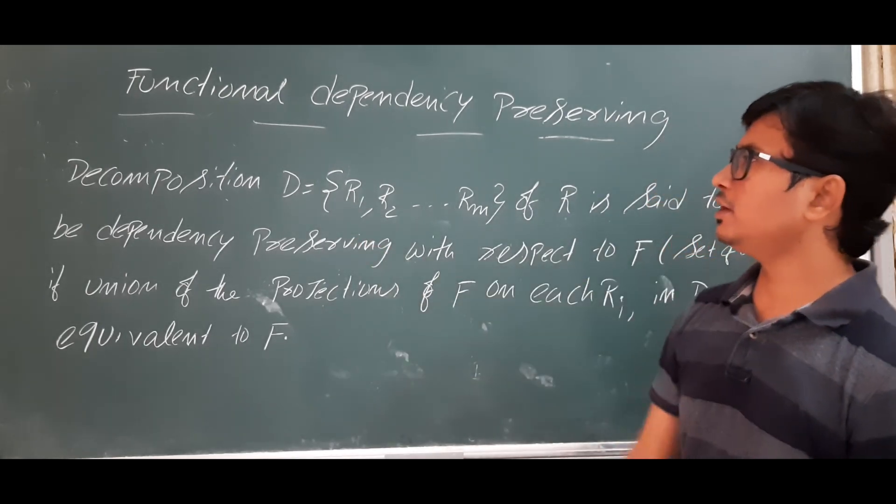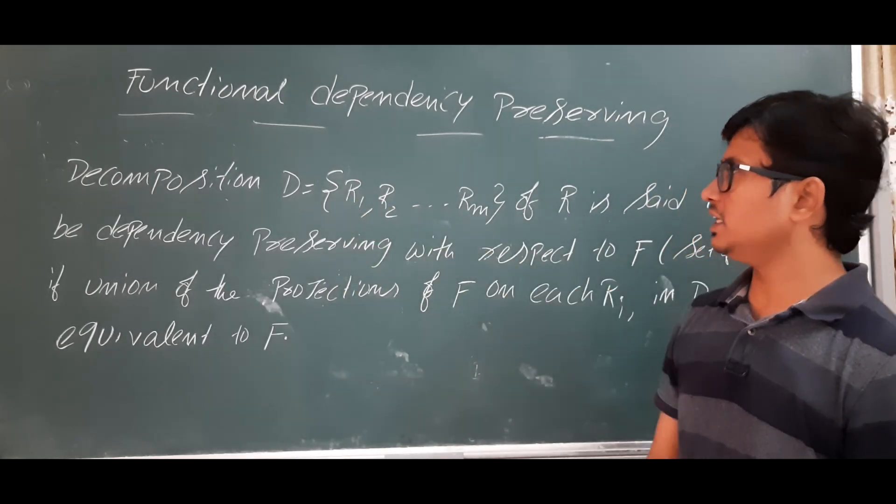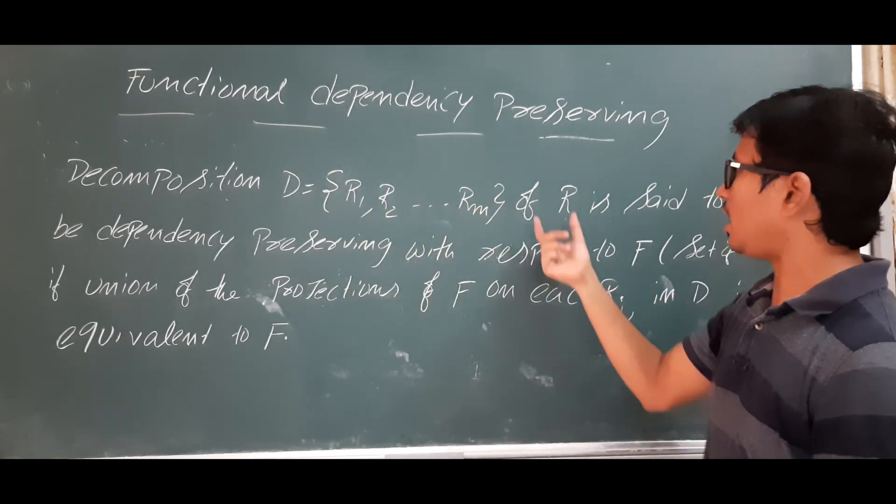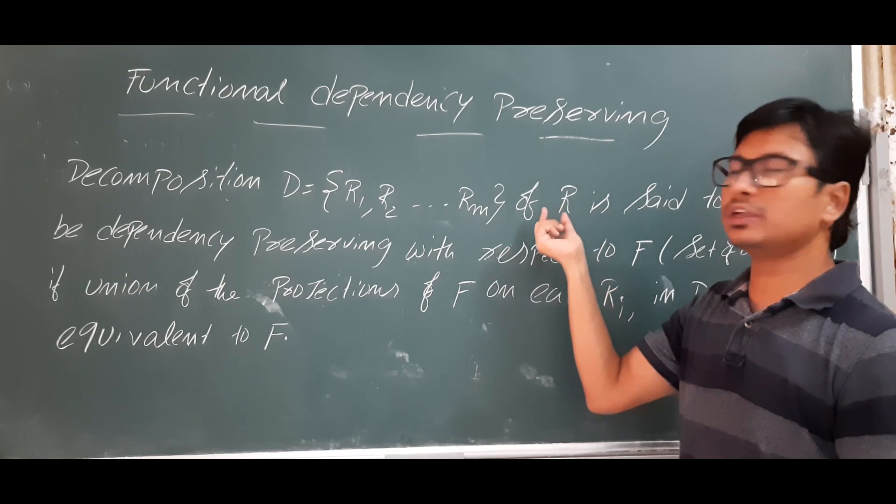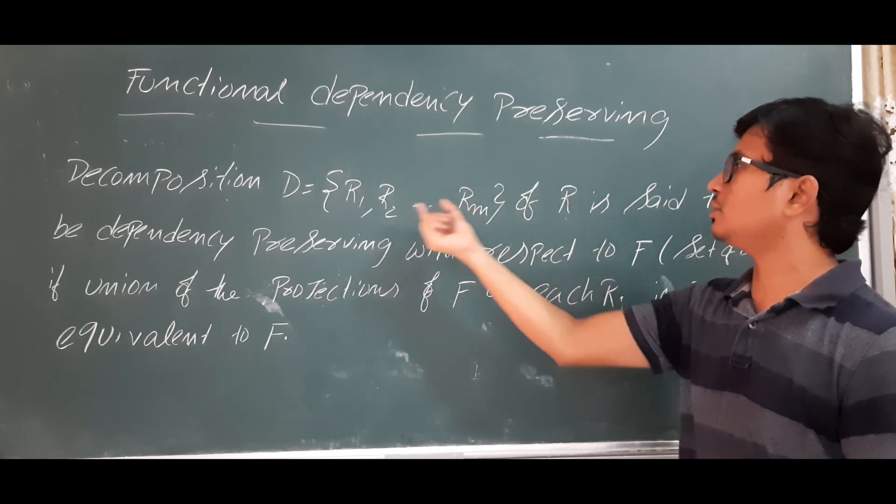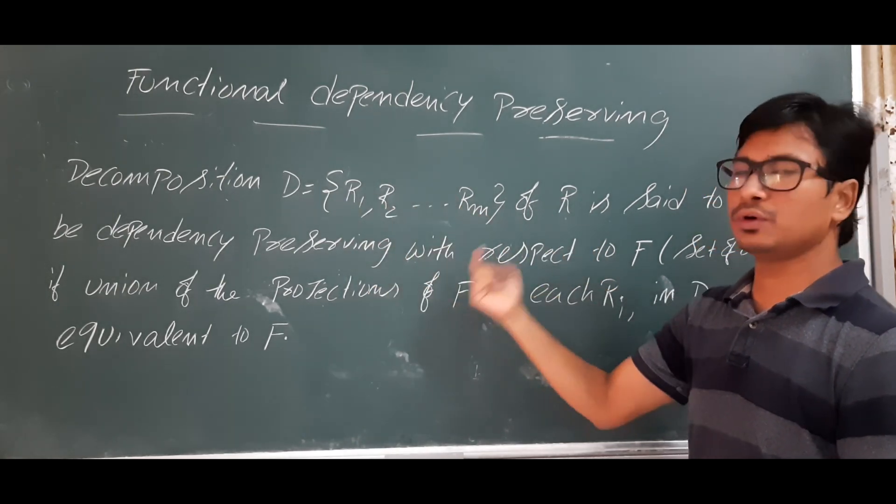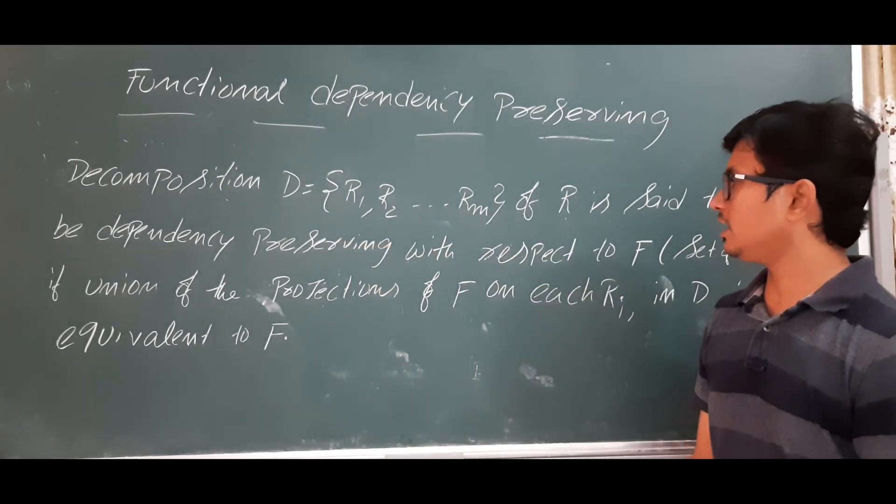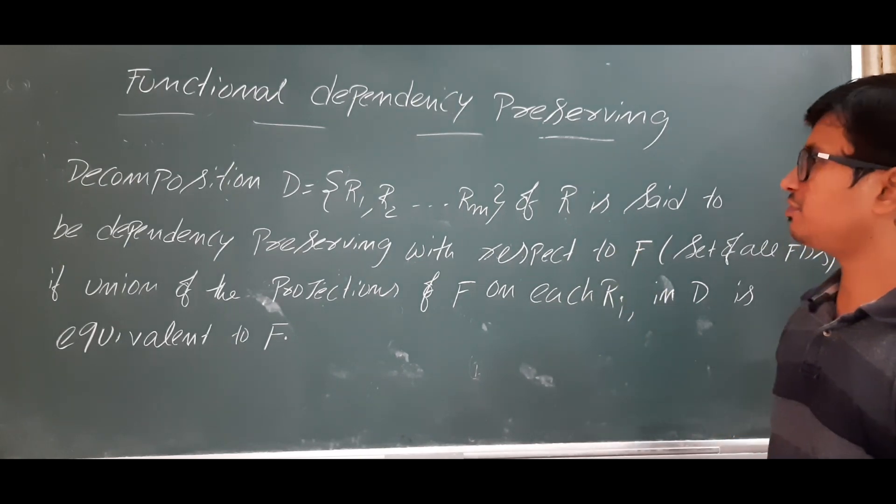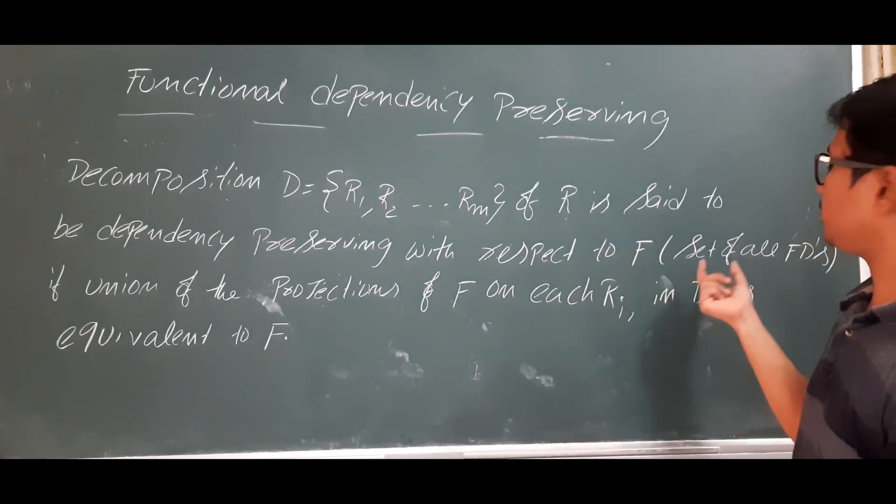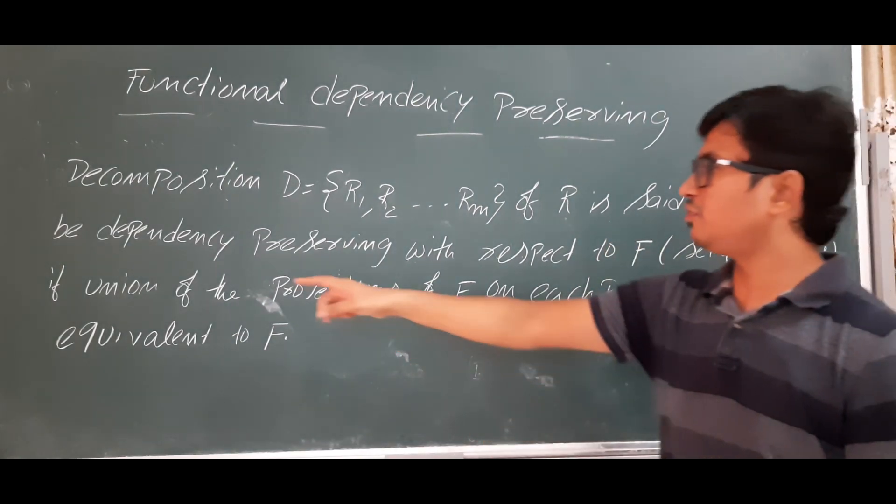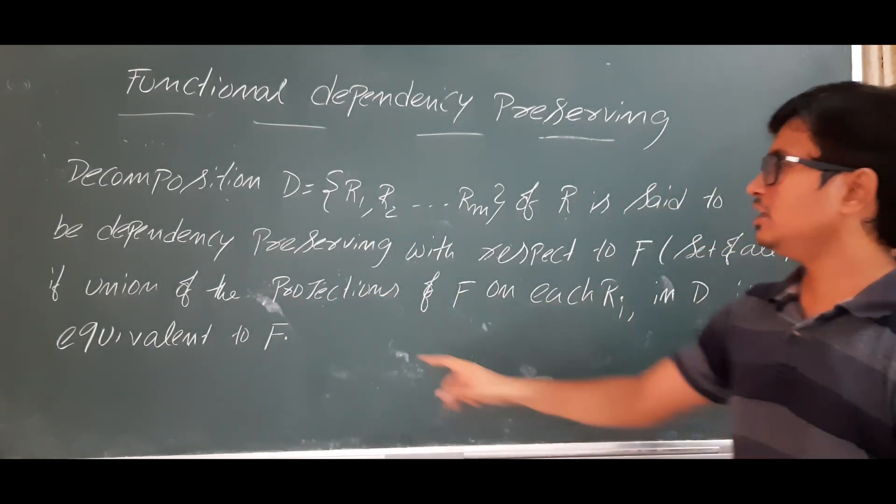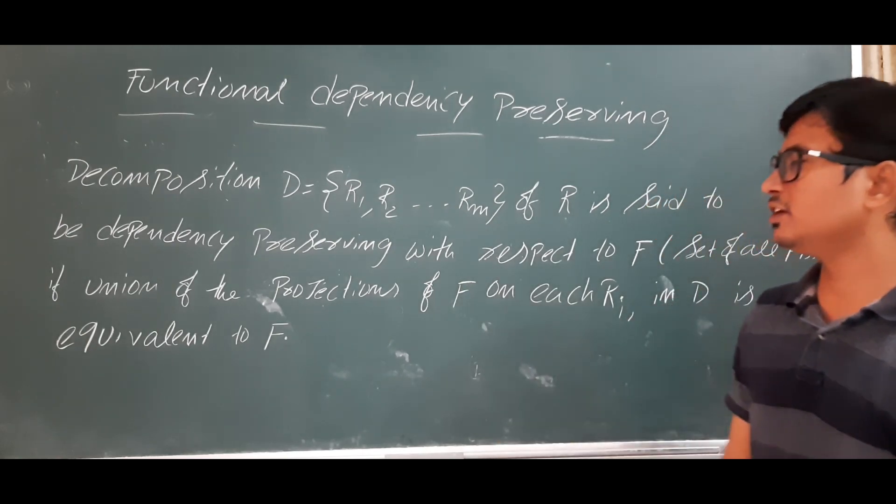Let me read out the definition. Decomposition D is set R1, R2, so on RM of R, meaning they have decomposed the relation R into R1, R2 up to RM, is said to be dependency preserving with respect to F (the FD) if union of the projections of F on each Ri in D is equivalent to F.